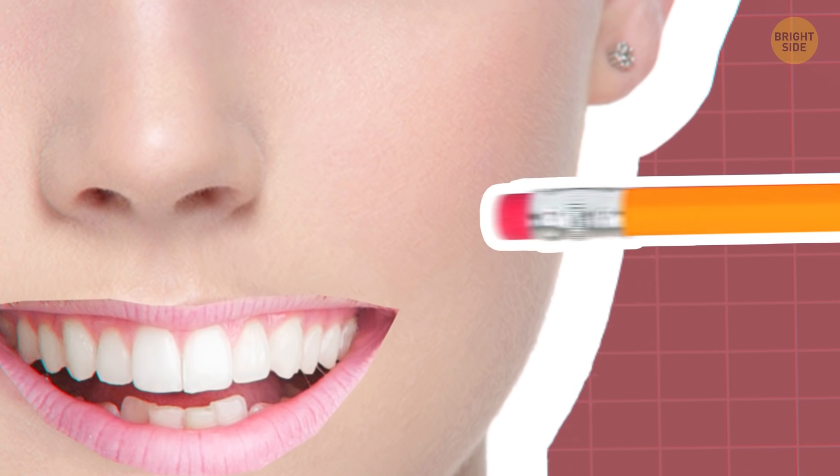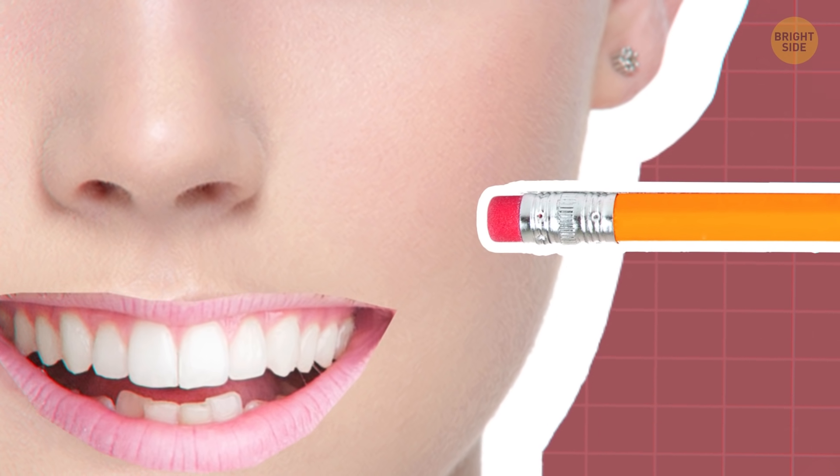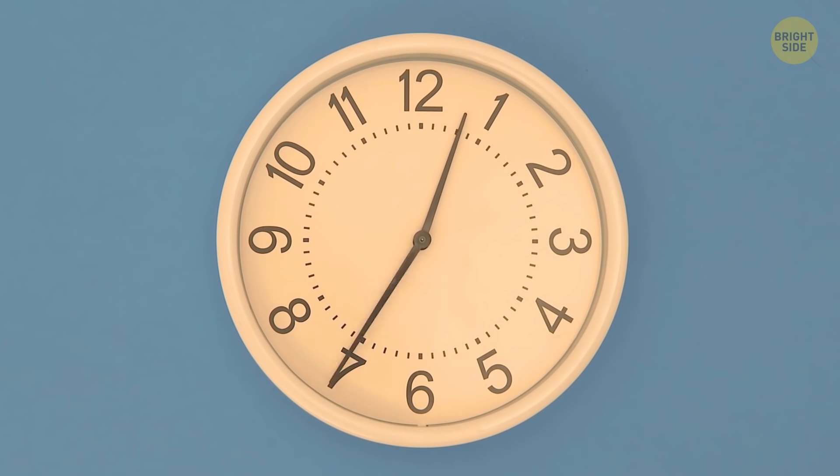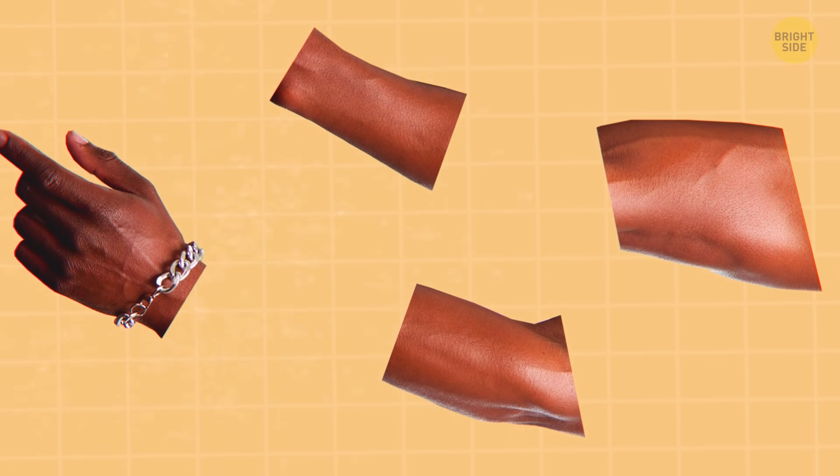Dimples are usually genetic, but you can train your cheek muscles to create them. Just press your thumbs or the eraser end of a pencil in the spots you want your dimples to appear. Do it every day for at least 30 minutes, and you should see results in a month.